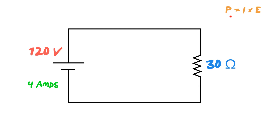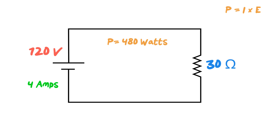Let's start with the easy one first: Power is equal to I times E — or E times I, or V times I, however you want to look at it. This shows the direct proportional relationship: if voltage goes up, power goes up; if current goes up, power goes up. So P equals 120 volts times 4 amps, which calculates out to 480 watts.